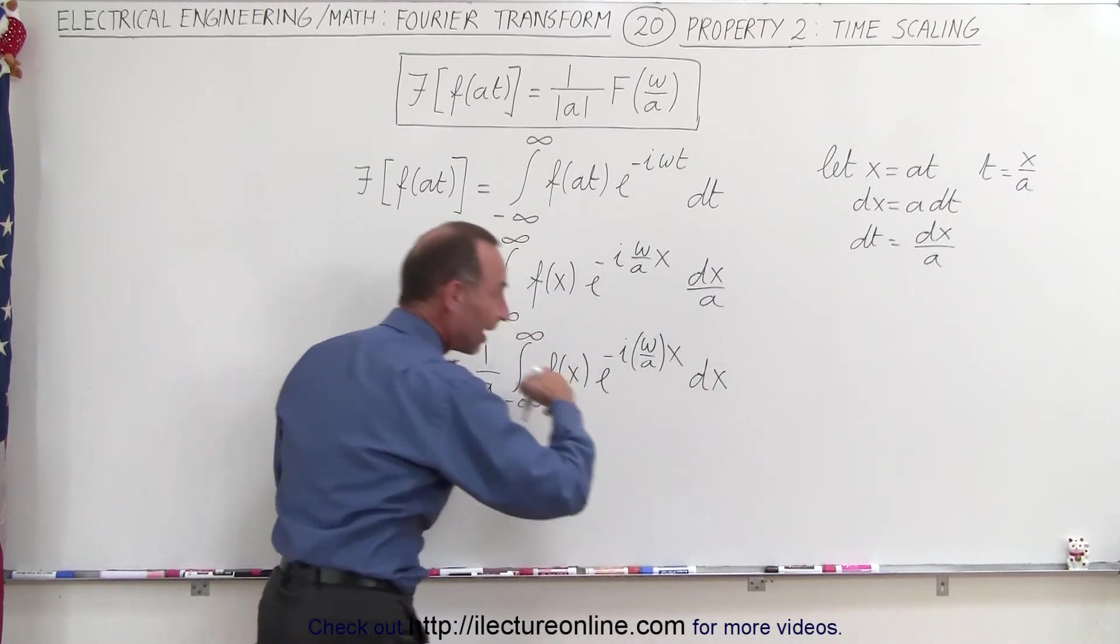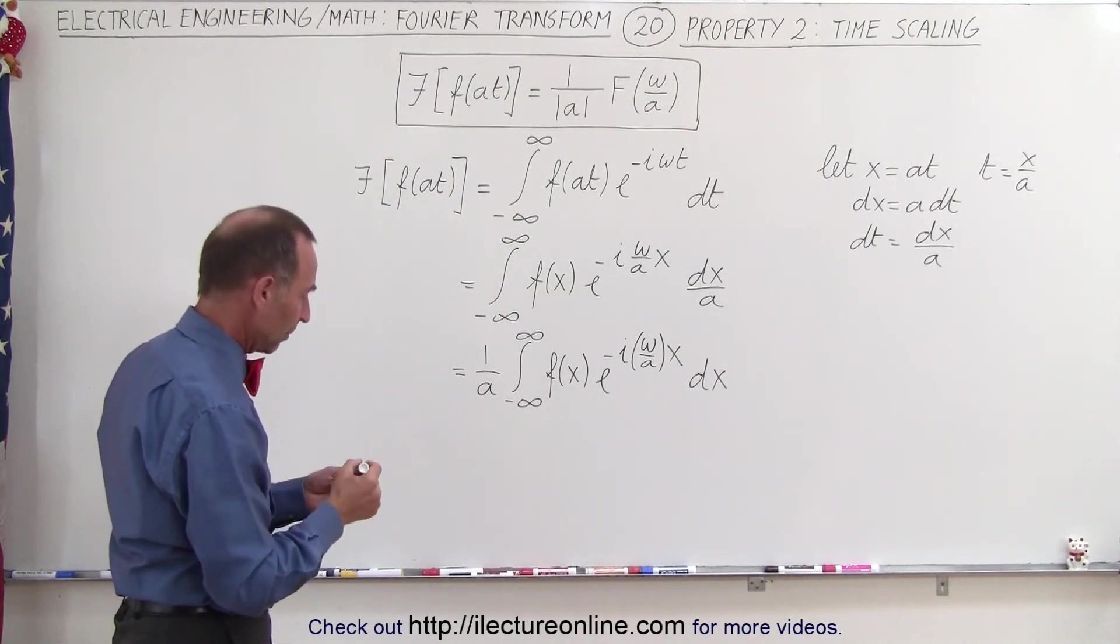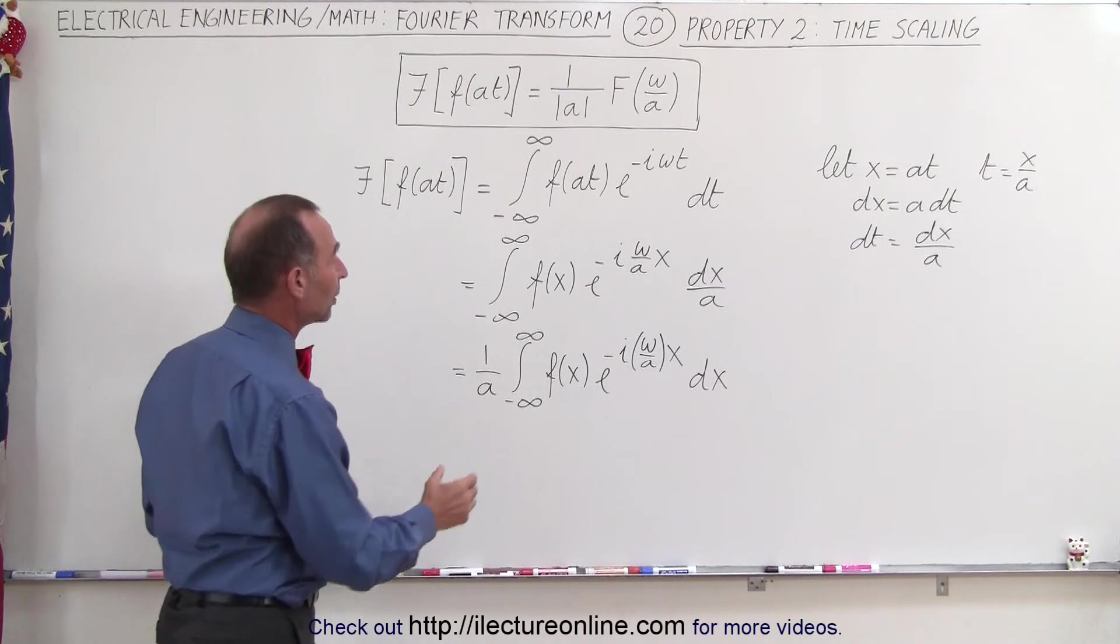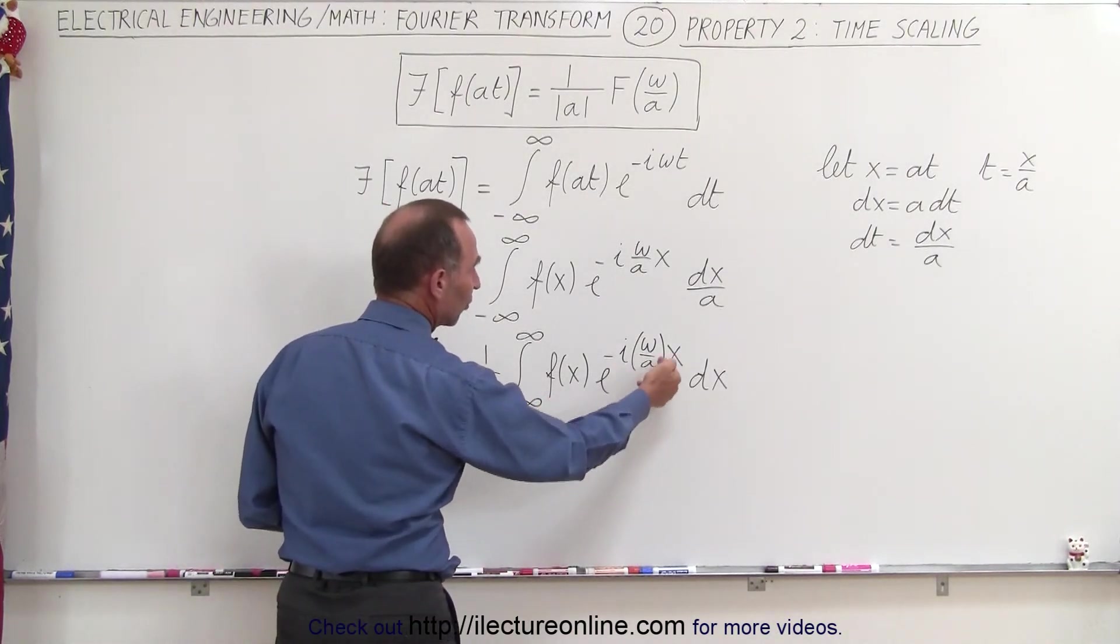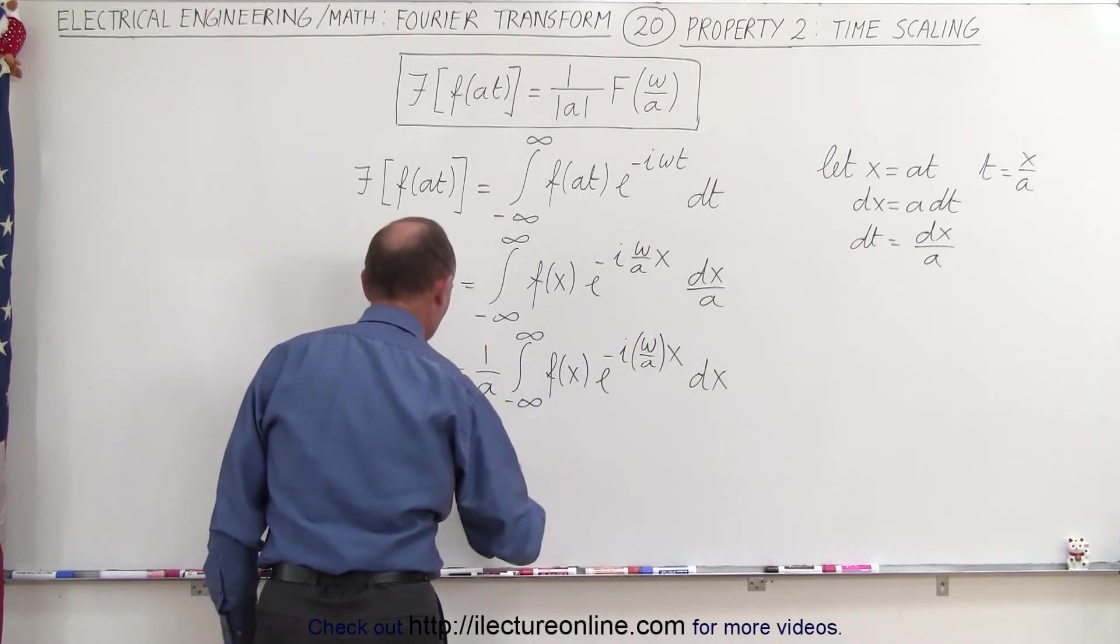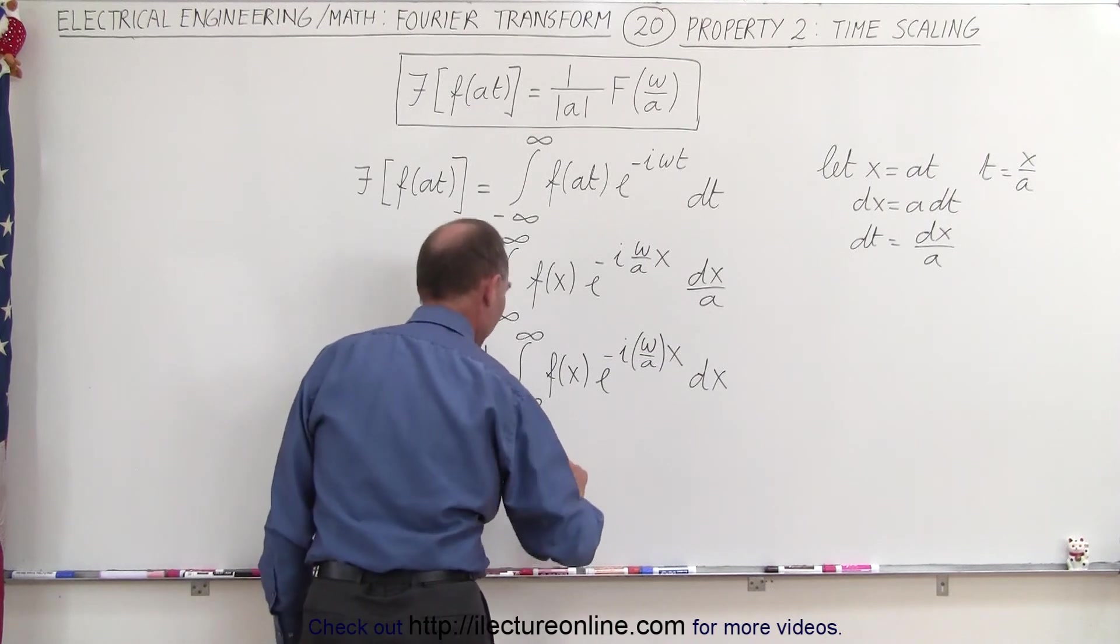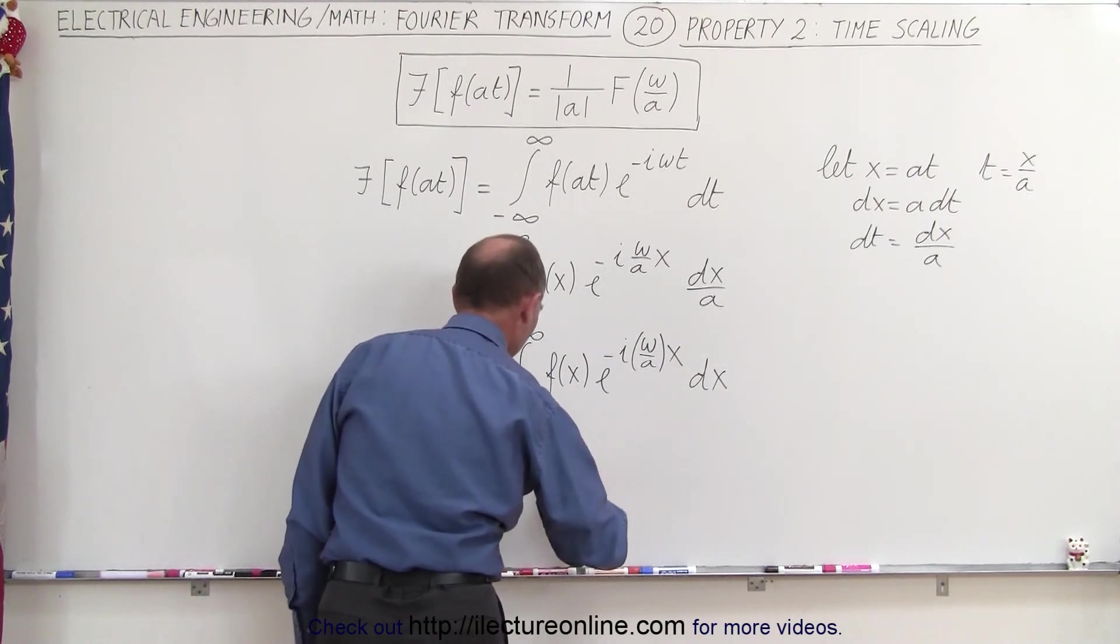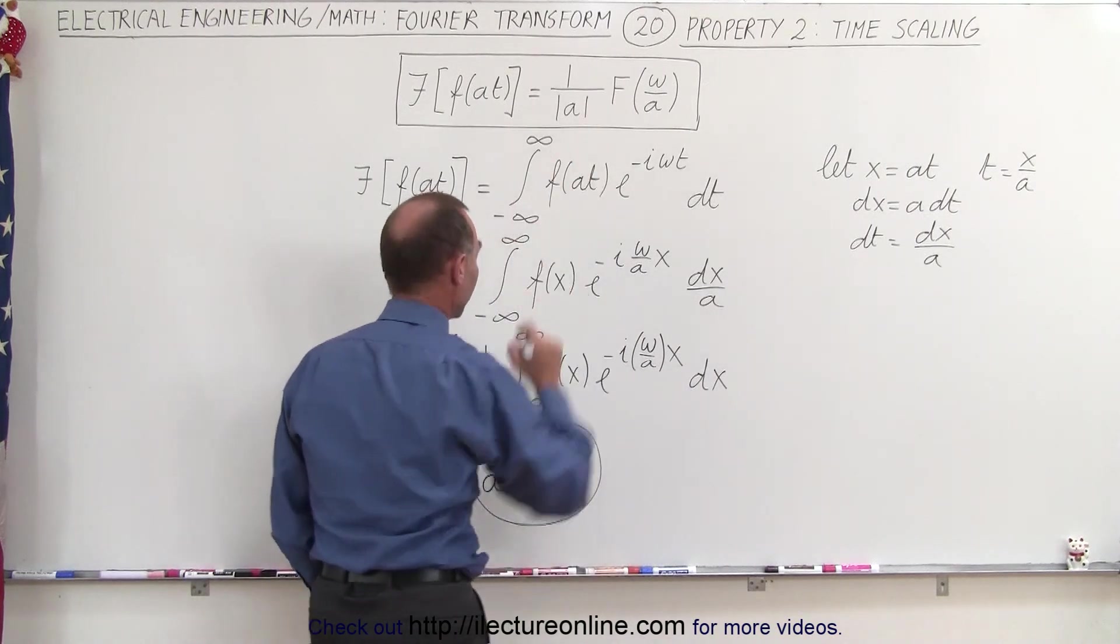Now this here looks like our standard form of the integral for a Fourier transform. And the result of that will simply be that we'll get the Fourier transform of this, which gives us the Fourier transform of omega over a. So this can be written as 1 over a times the Fourier transform of omega over a. And that's exactly what we had over here.